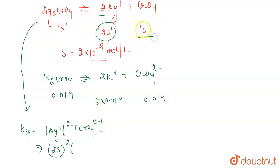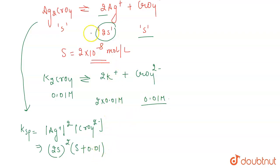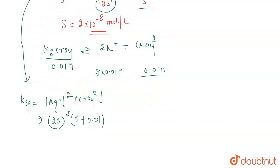The concentration of CrO₄²⁻ is s (from Ag₂CrO₄) plus 0.01 (from K₂CrO₄), because CrO₄²⁻ is common to both solutions. Therefore, the total concentration of CrO₄²⁻ is s + 0.01.